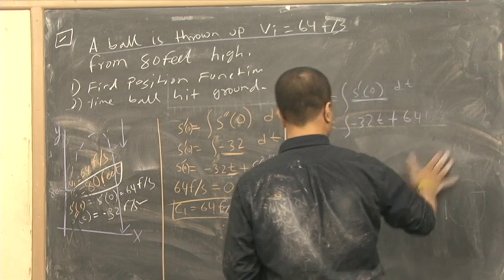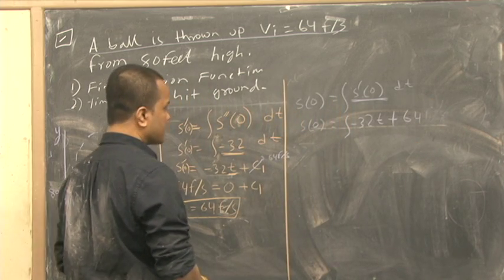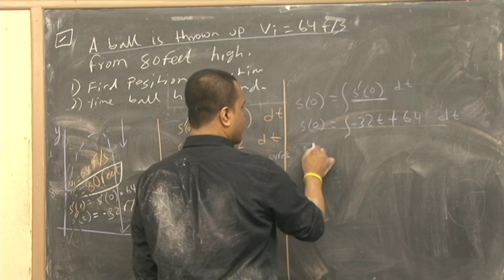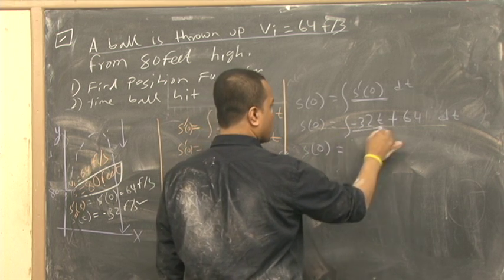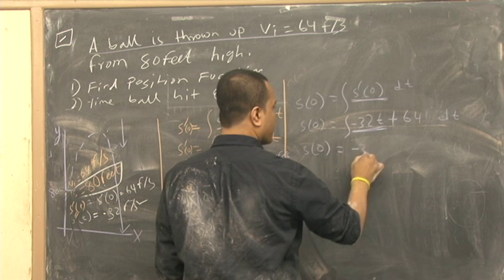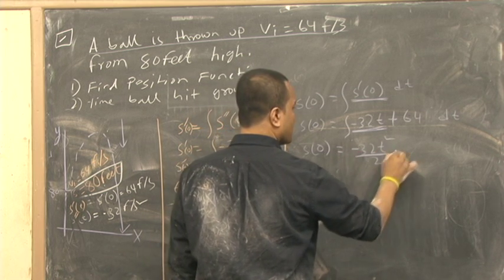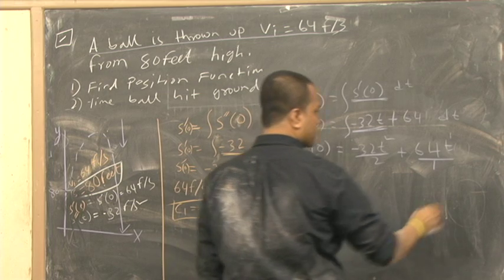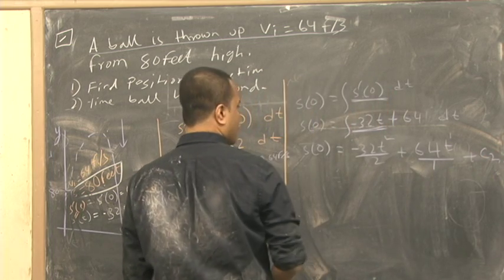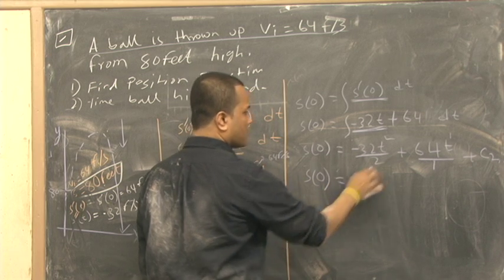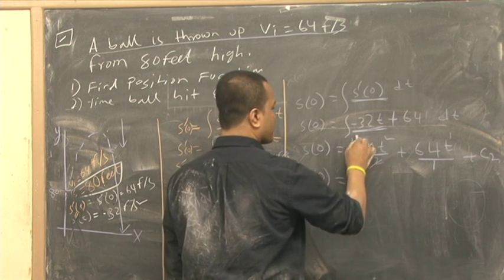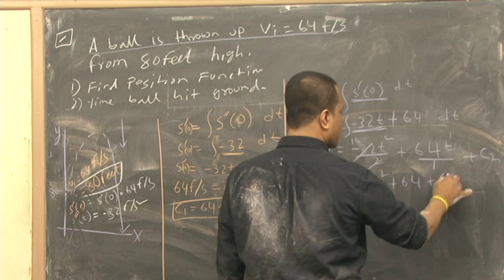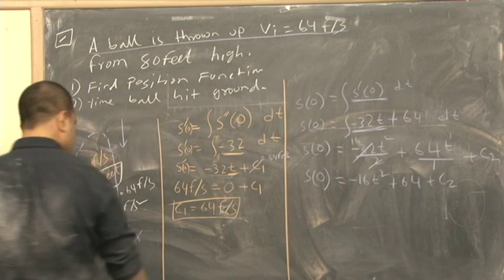We're not going to worry too much about the unit now. S of t equals the integral of negative 32t plus 64 dt. The integral is negative 32t squared over 2 plus 64t plus c2.